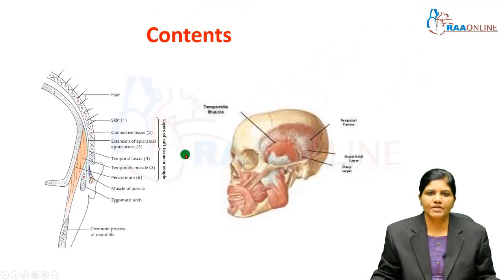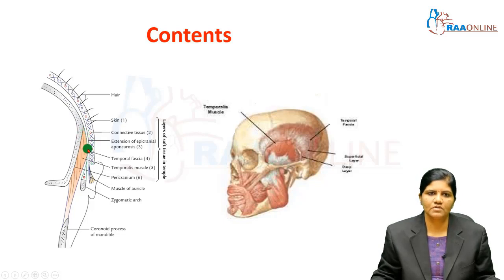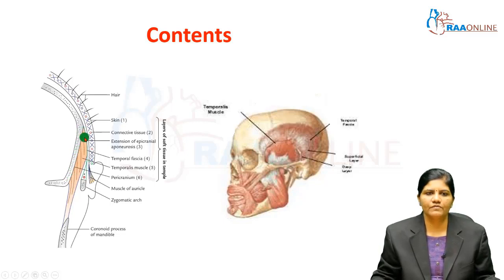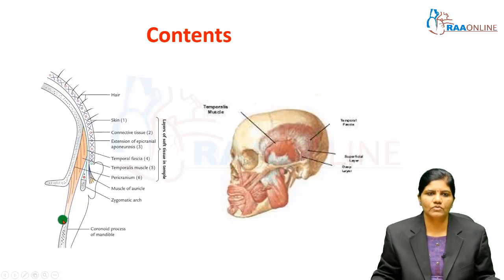Like the scalp, the temple also has layers from superficial to deep: skin, connective tissue, and an aponeurotic layer which blends with the temporal fascia. Deep to the fascia is the origin of the temporalis muscle, which takes origin from the squamous part of the temporal bone and the temporal fascia. The muscle fibers converge to form a tendon, which crosses the gap deep to the zygomatic arch and inserts into the tip and medial surface of the coronoid process of the mandible.